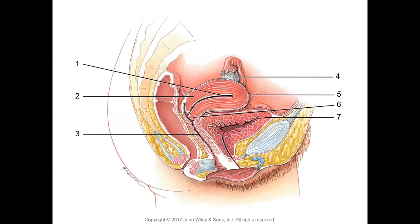Moving on to Figure 39.2, showing the female reproductive system through a sagittal section. Number one is the uterine cavity. Notice the angle between the axis of the uterus and that of the vagina — this angle is known as anteflexion. The majority of cases the uterus is anteflexed. Very rarely, occasionally the uterus may be flexed backwards, and that is known as a retroflexed uterus.